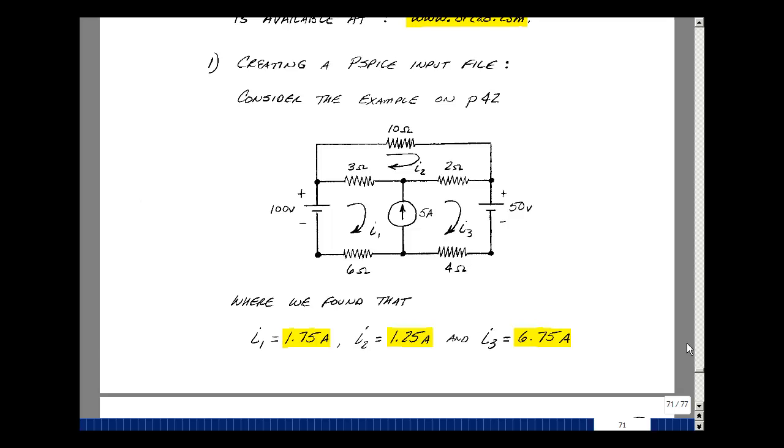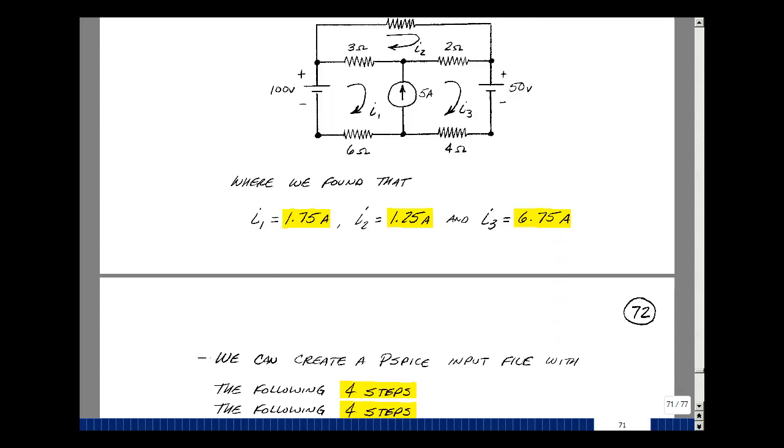Let's take the example we did on page 42, where we solved for three mesh currents, I1, I2, and I3, and we found that they were 1.75 amps, 1.25 amps, and 6.75 amps. We're going to try to solve the same problem on PSPICE.